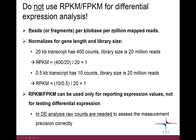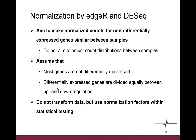That is why you cannot use FPKMs or RPKMs when doing differential expression analysis — you need those original raw counts, in this case the 400 and the 10. Now let's see how edgeR and DESeq2 normalize things.